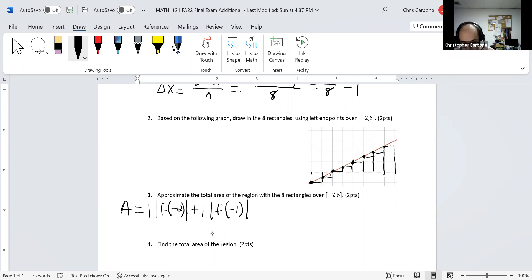Plus 1 times the absolute value of f of negative 1, plus 1 times f of 0, plus 1 times f of 1, plus 1 times f of 2, plus 1 times f of 3, plus 1 times f of 4, plus 1 times f of 5.